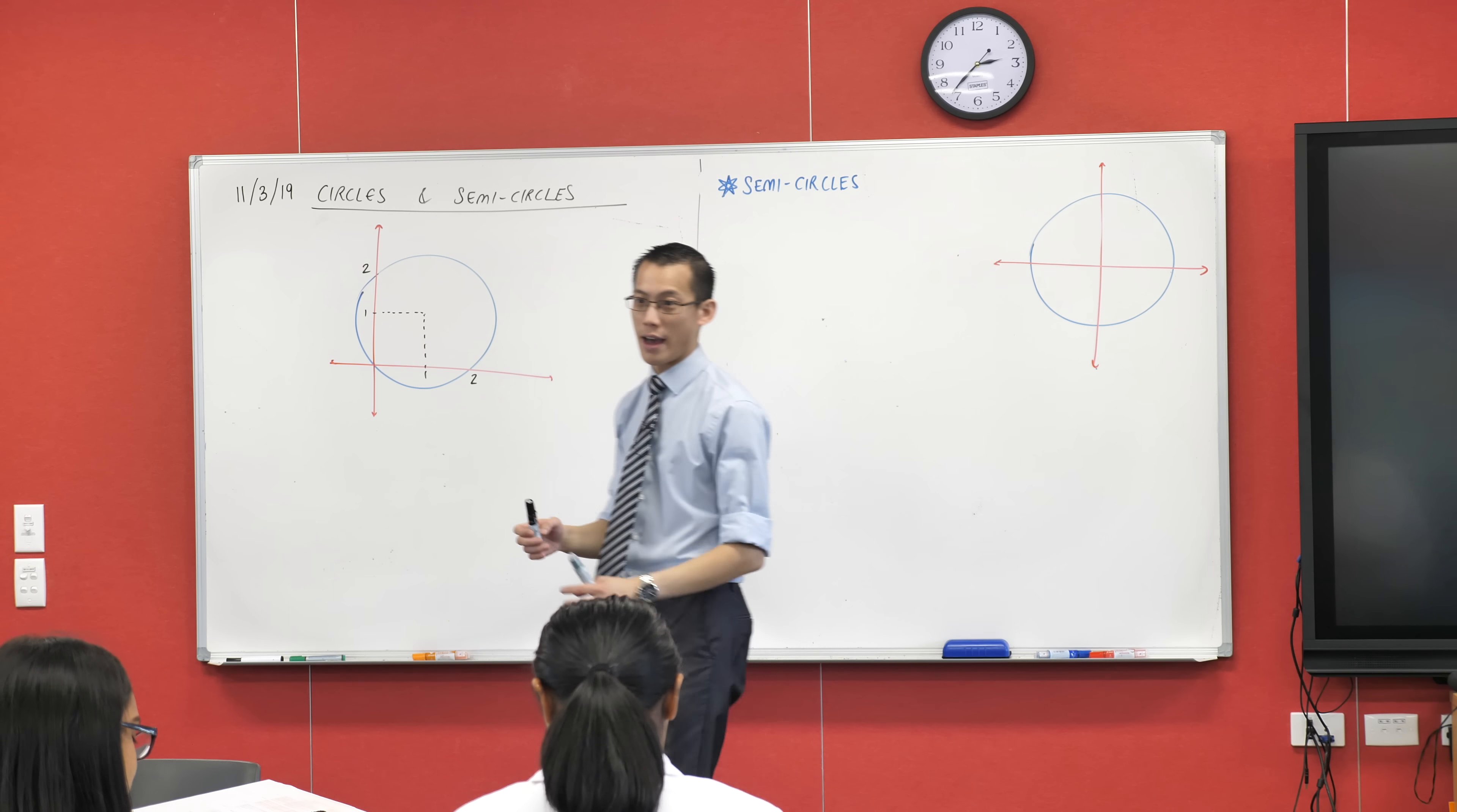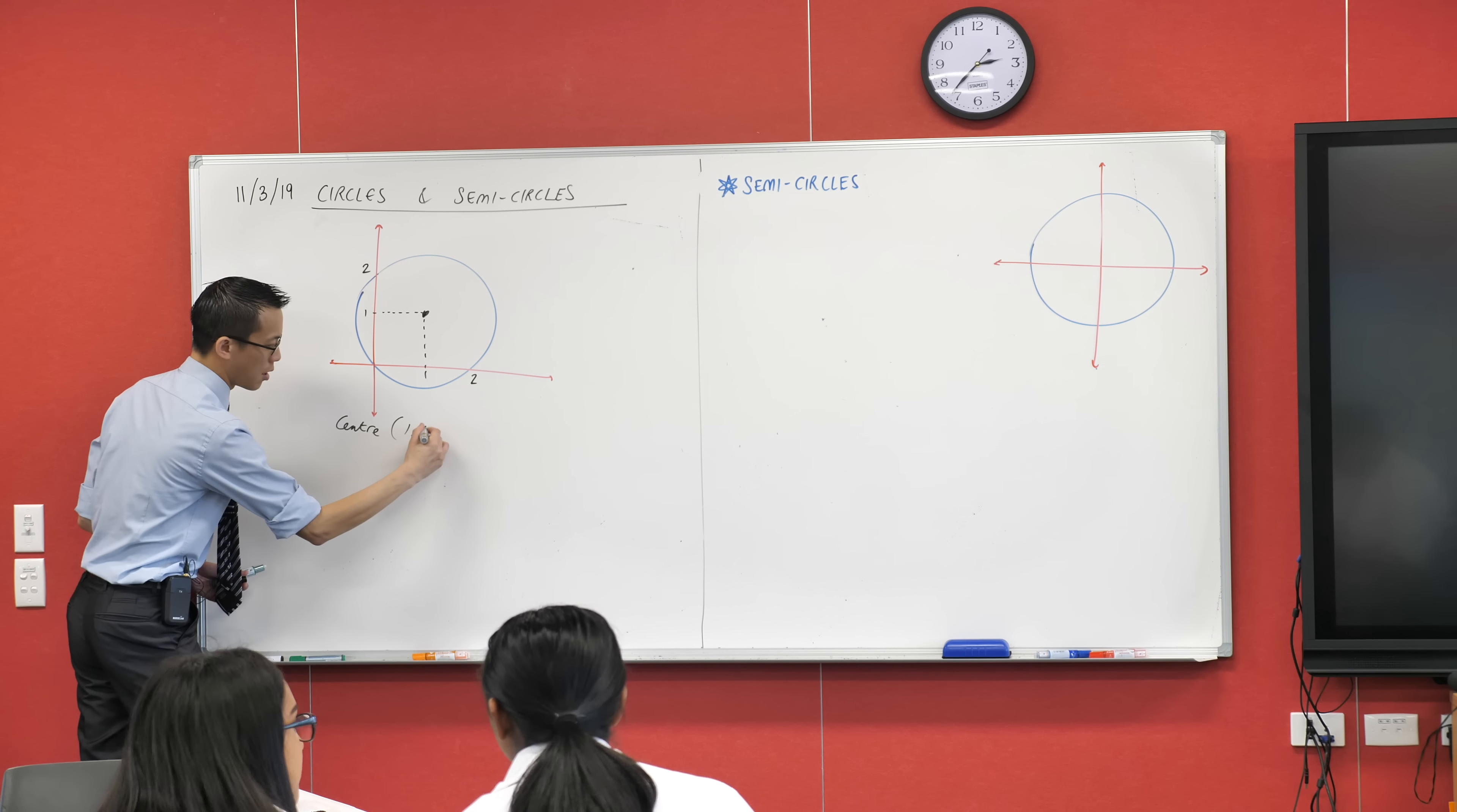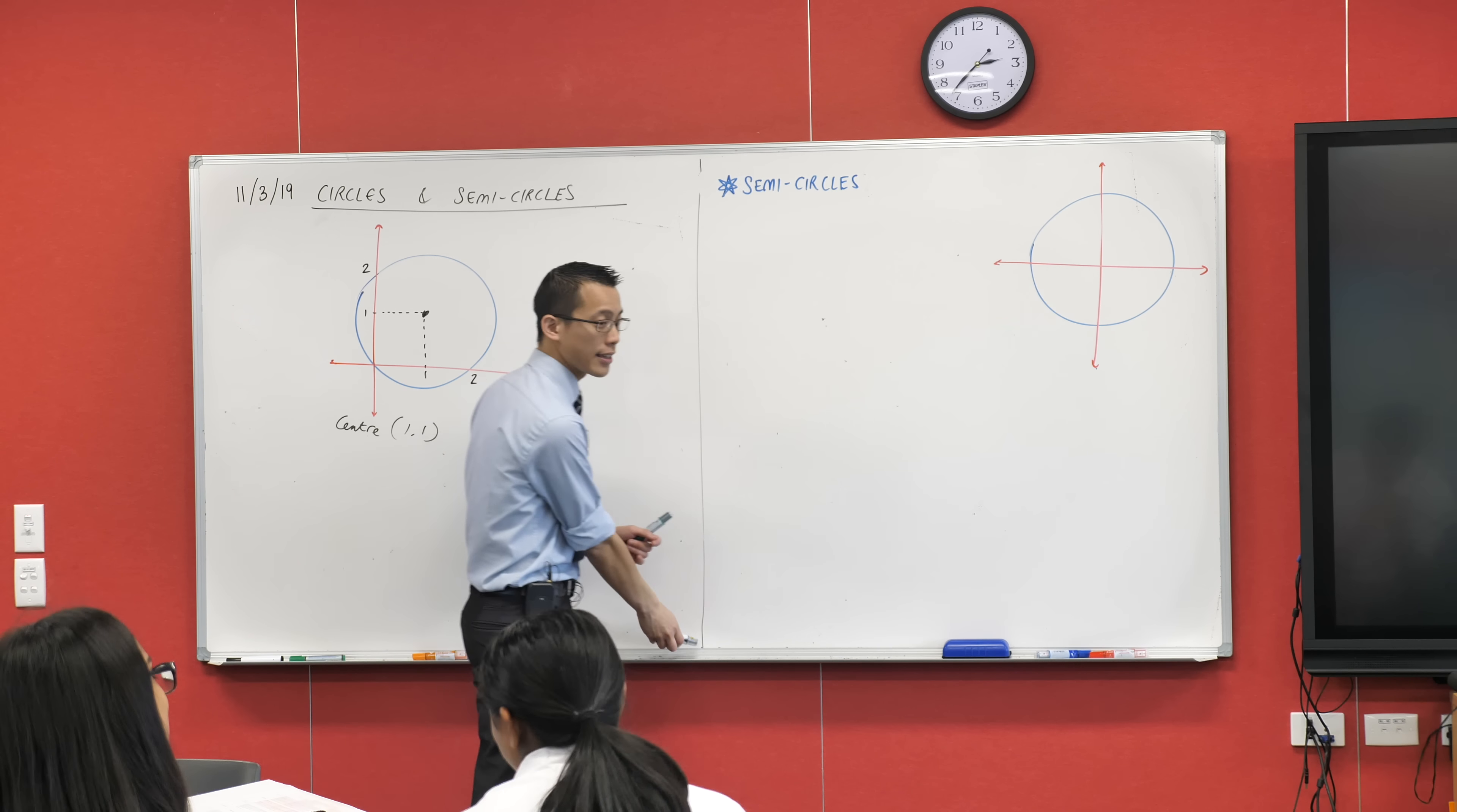So this is the circle that they give you. Some of it is easy to see and some of it's not so easy. We're being asked to find the center and the radius of this circle. Which of those two pieces of information is easier to see? The center, right? You can't easily calculate the radius.